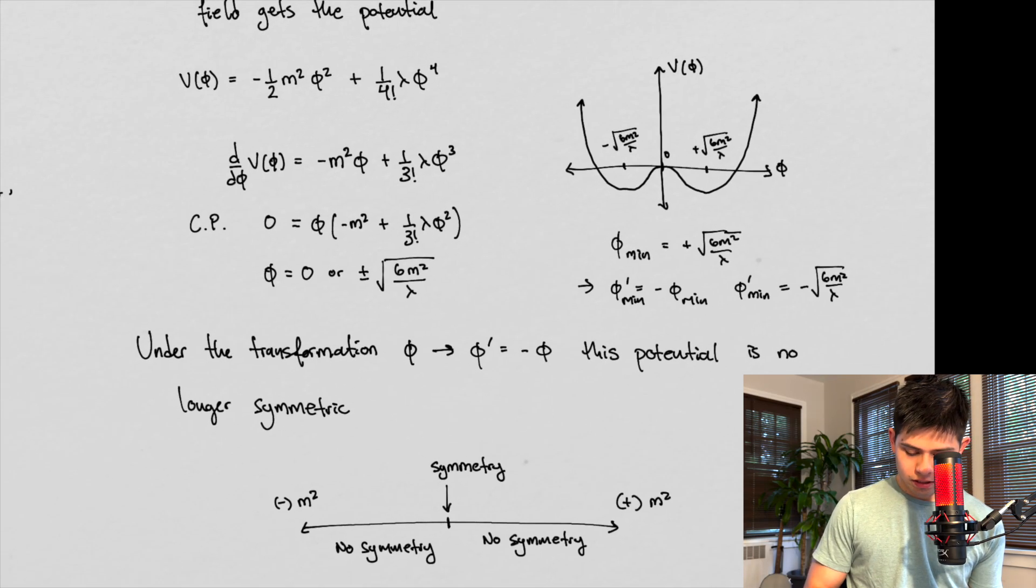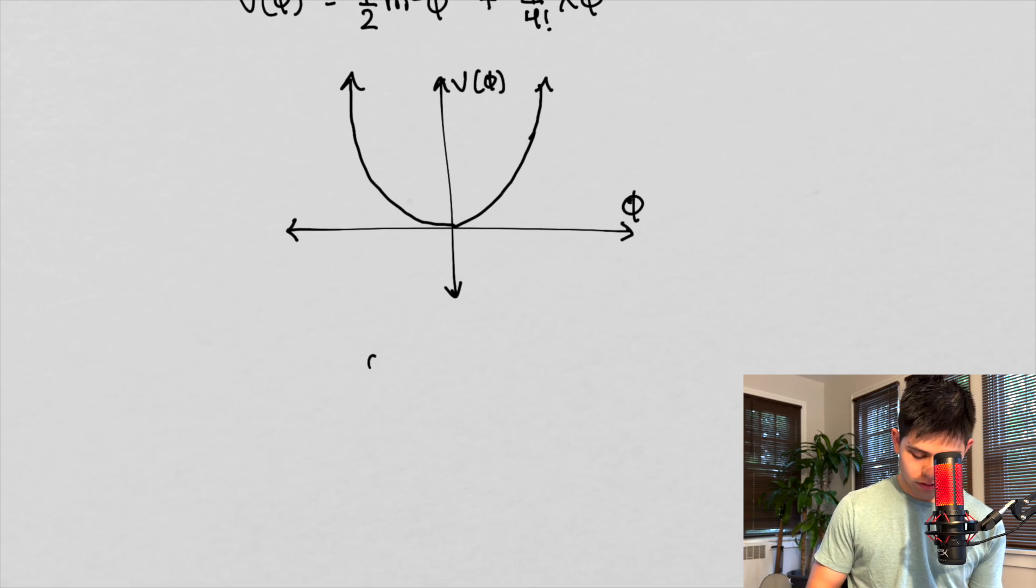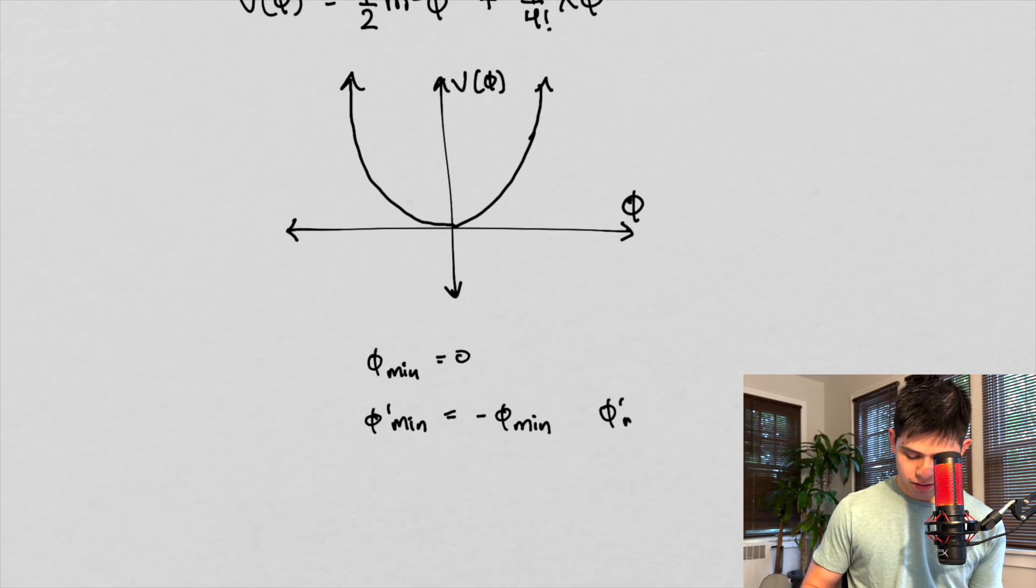However, in this case, down here, if phi min equals zero, our new phi min, if our new phi min equals the negative of our old phi min, well, that just means that phi min equals zero. So in this case, phi min is equal to zero. I just redone it. That's redundant.